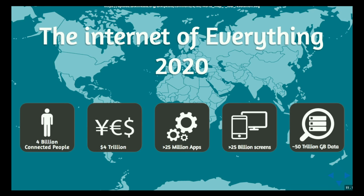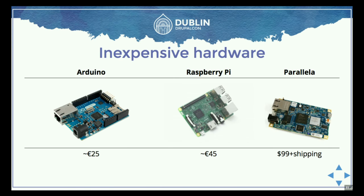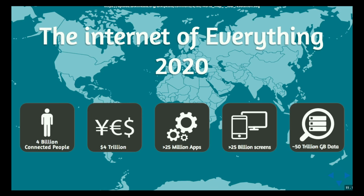Now we get to the source that covers it all — the Internet of Everything. If we predict to 2020, half of the world population — over 8 billion people — will be connected to the internet. It will be a market of 4 trillion US dollars. There will be more than 25 million apps. Every person will have 5 screens at their disposal. We will all generate like 50 trillion gigabytes of data per day.